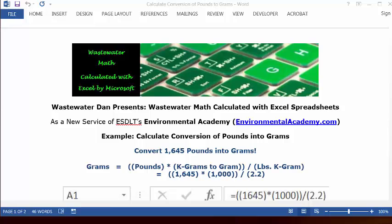And we're going to take all of that and divide it by the conversion from pounds to kilograms. So, the conversion factor from kilograms to grams is 1,000, and the conversion factor from pounds to kilograms is 2.2.